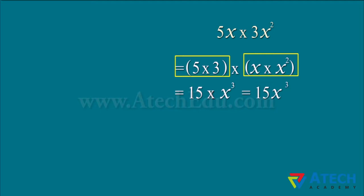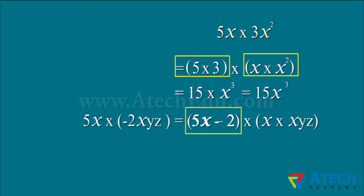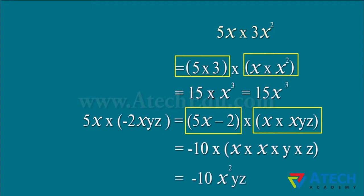Similarly, if we need to find the product of 5x and -2xyz, then the product of coefficients will be -10, and product of variables will be x²yz.